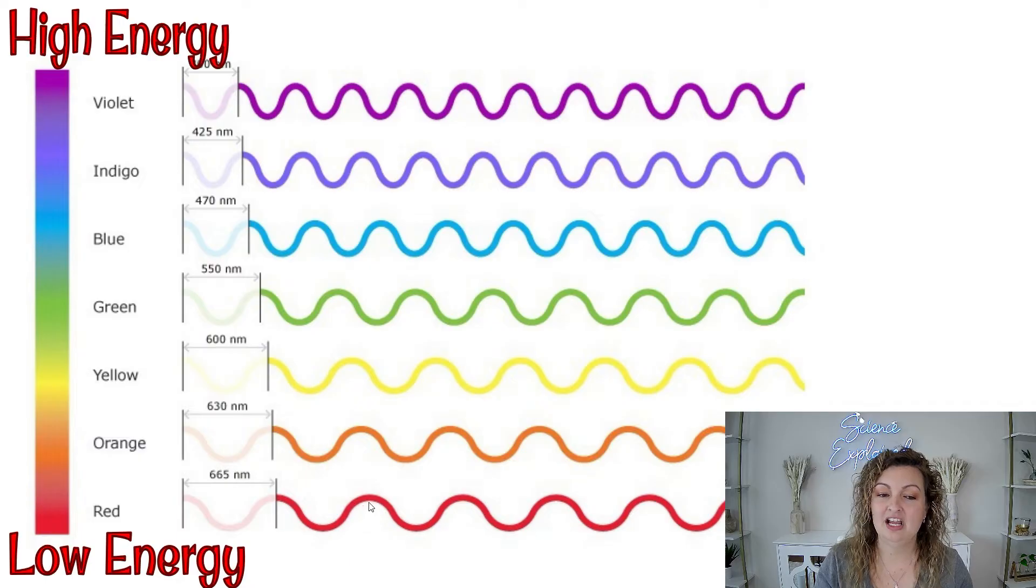But if we look at red again, this is going to have the lowest frequency, the least amount of waves occurring, but it also will give us the lowest amount of energy. So based off of this, our flame will turn different colors.